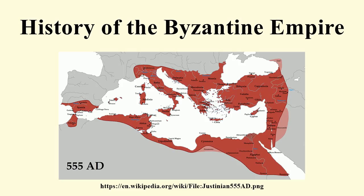Because of his ecclesiastical policies, Justinian came into collision with the Jews, the pagans, and various Christian sects. The latter included the Manichaeans, the Nestorians, the Monophysites, and the Arians. In order to completely eradicate paganism, Justinian closed the famous philosophic school in Athens in 529.